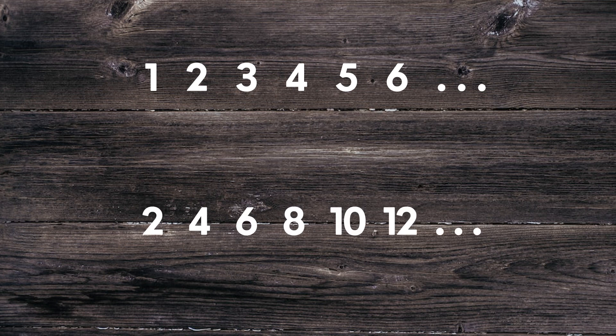I can show that there are as many counting numbers as there are even numbers. How is that even possible? Aren't counting numbers made of both even and odd numbers? Yes — let me show you how. I can start by listing all the counting numbers and then write down the even numbers right below them. I can map the number 1 to its double 2, 2 to 4, 3 to 6, and so on until every number is mapped to its double. There are infinitely many of both, so that works.